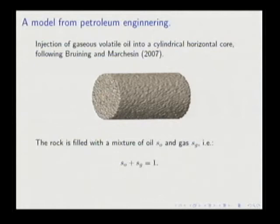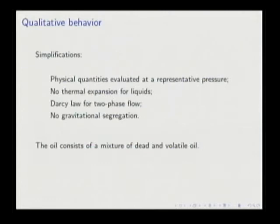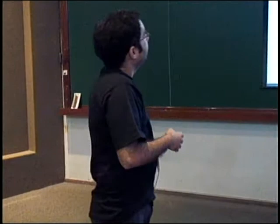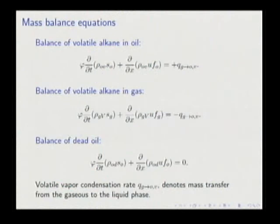The model involves two-phase compositional thermal flow in a porous medium, with the usual simplifications: physical quantities evaluated at a definite pressure, no thermal expansion for liquids, Darcy flow, no gravity. The liquid phase is a mixture of dead oil and volatile oil. Here are the mass balance equations — the usual suspects — including concentrations, saturations, Darcy flow, and a mass balance part related to the fact that oil can change phases.